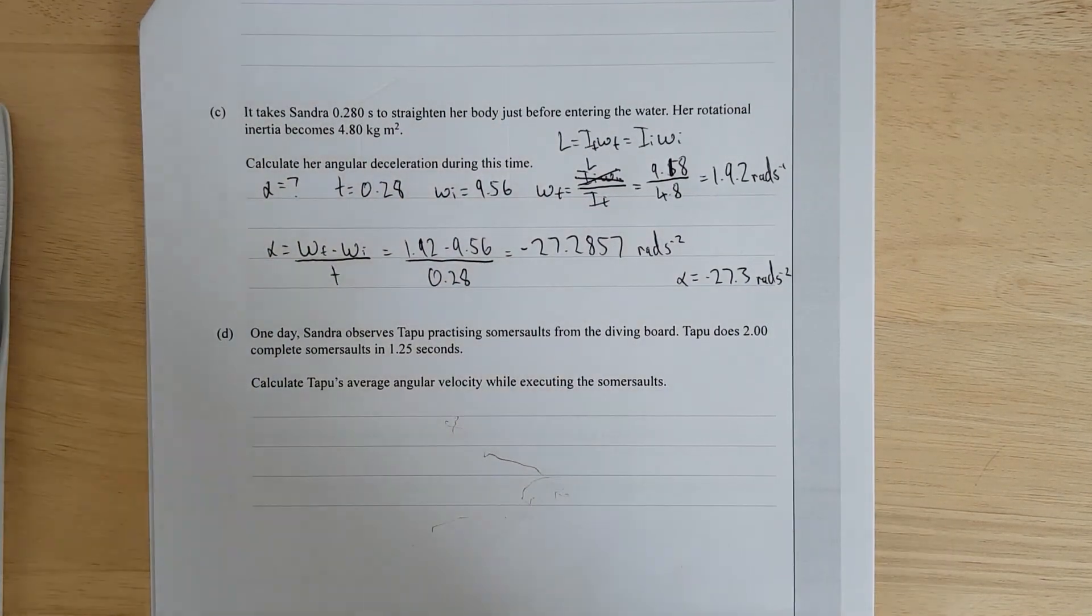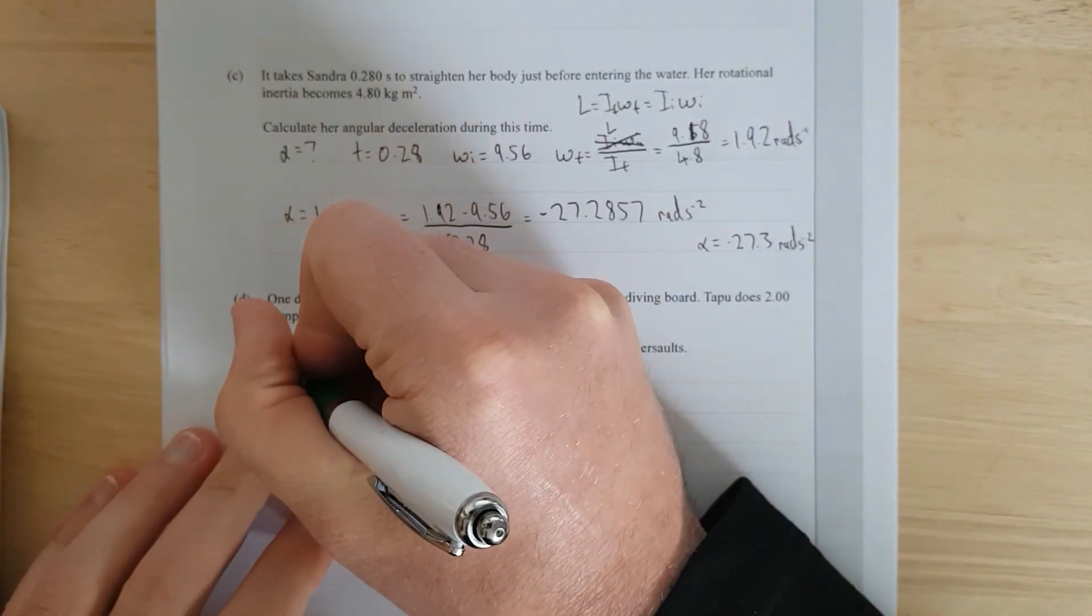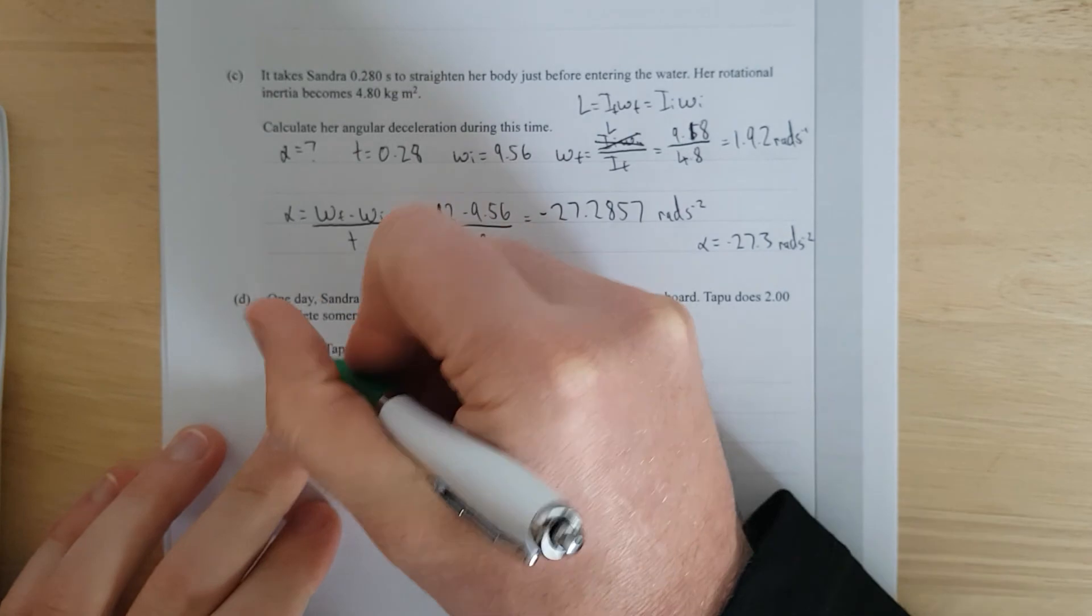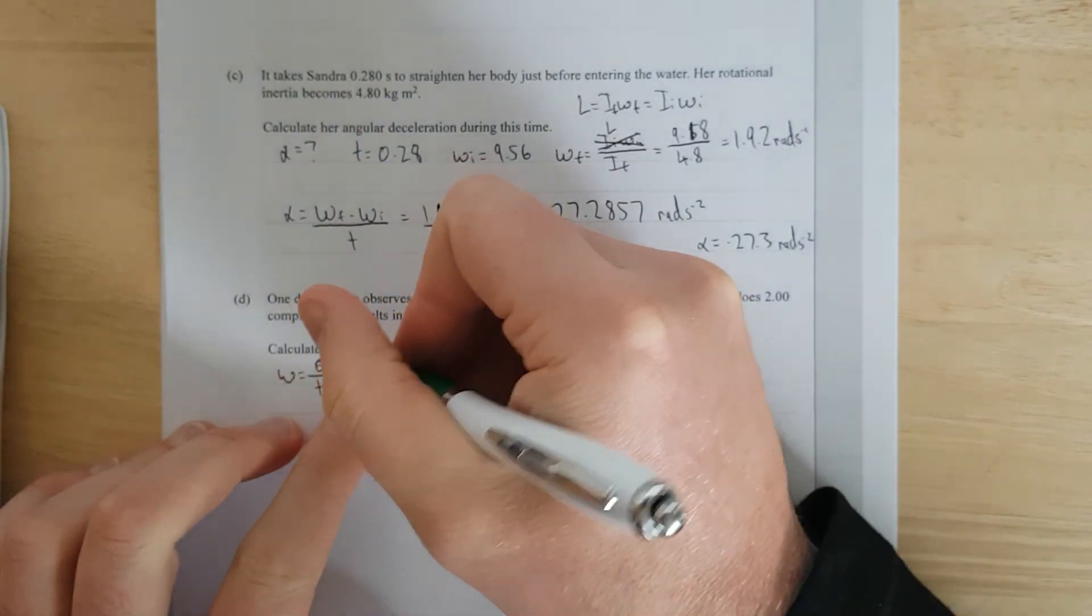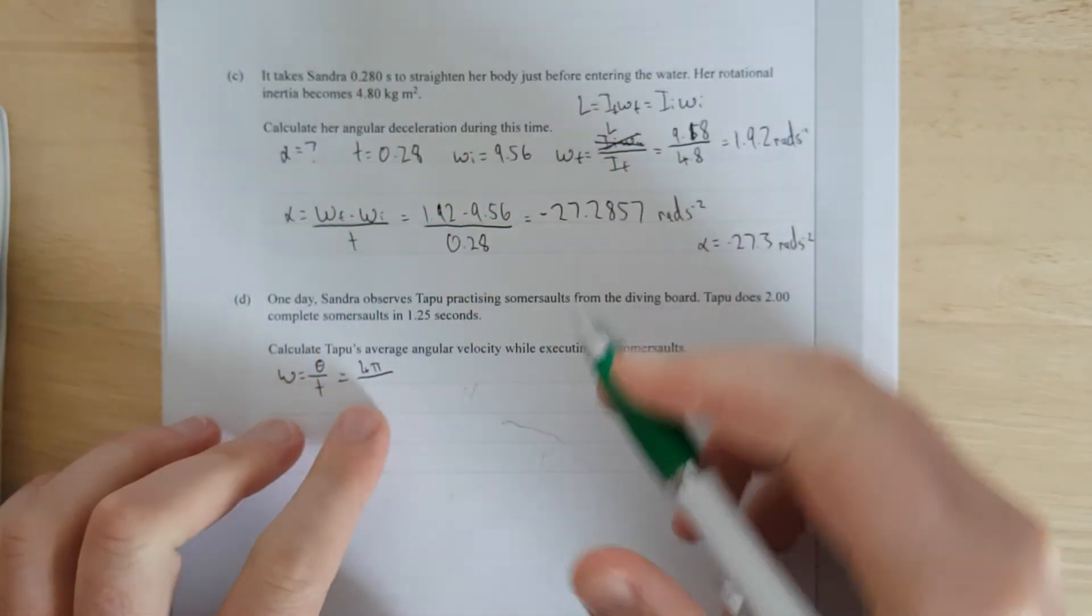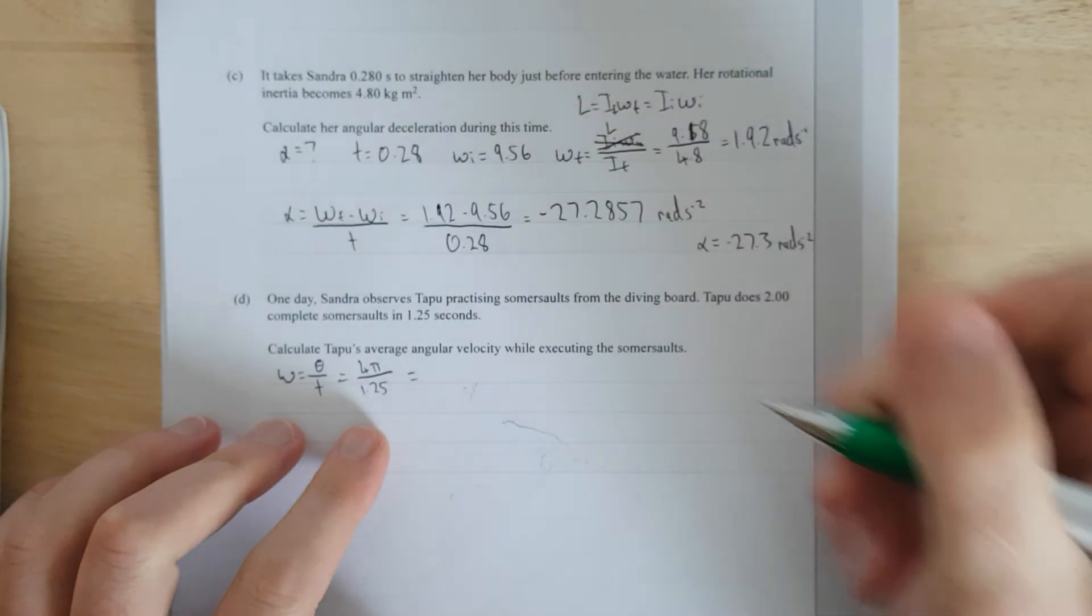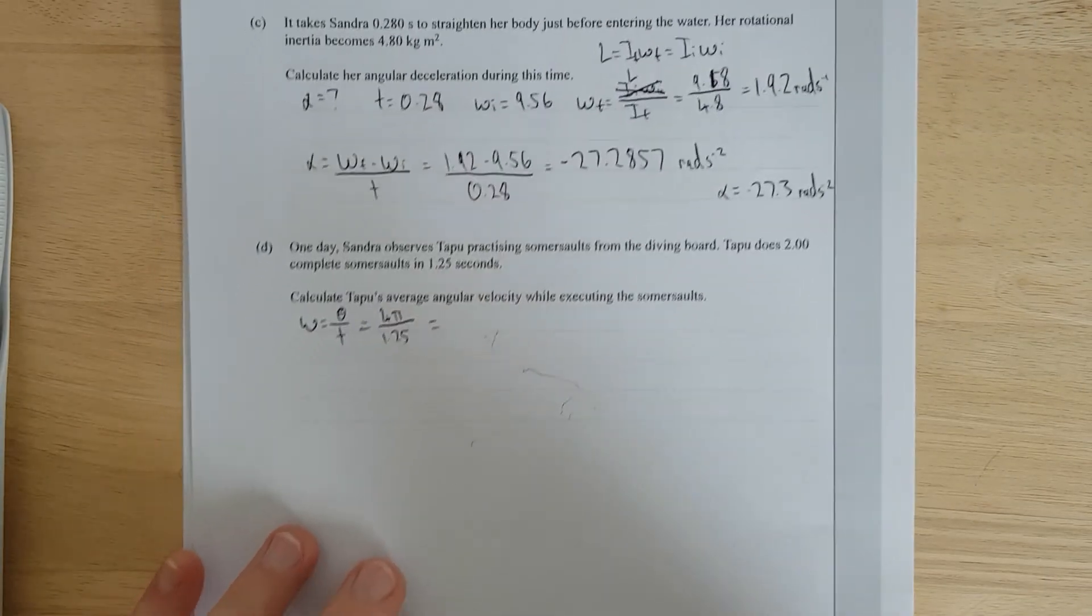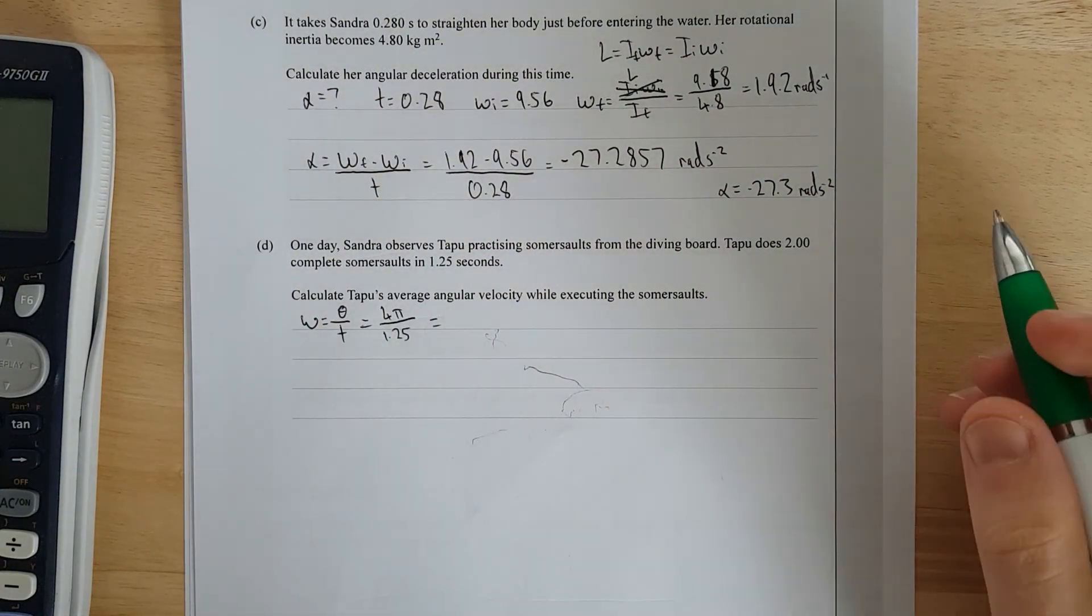Right, one day, Sandra observes Tapu practicing somersaults from the diving board. Tapu does two complete somersaults in 1.25 seconds. Calculate Tapu's average angular velocity while executing the somersaults. Velocity equals distance, so it's angular velocity equals angular distance over time. One full somersault was 2 pi, so it's literally just going to be 4 pi over, what's the time, 1.25 seconds. That's an easy question, isn't it. Tapu's a weird name, that's sacred, it literally translates to sacred in Māori. Yeah, this is cool.